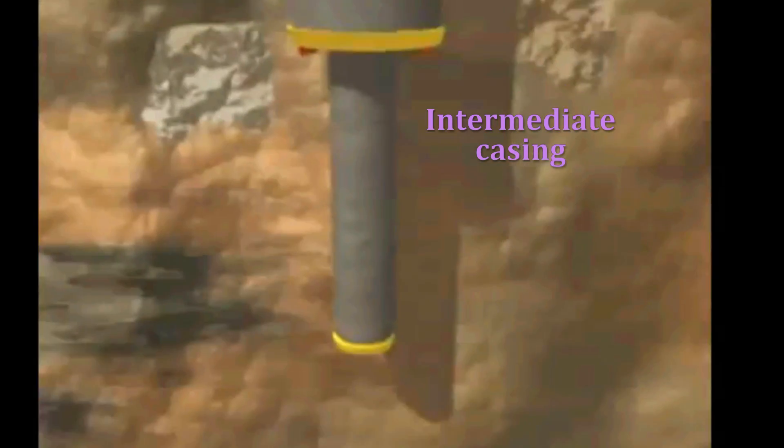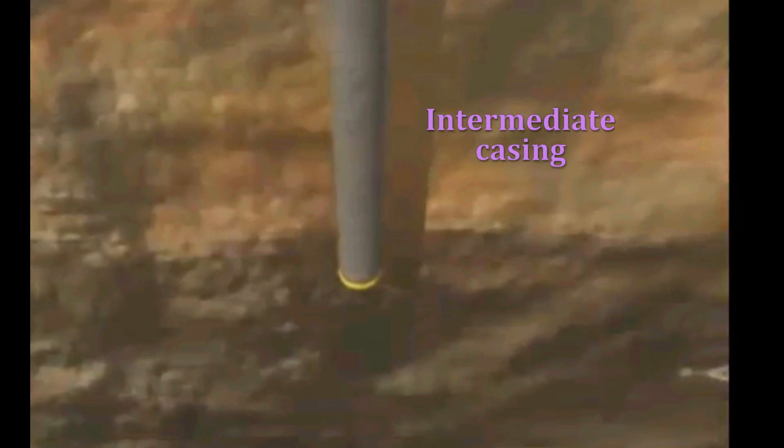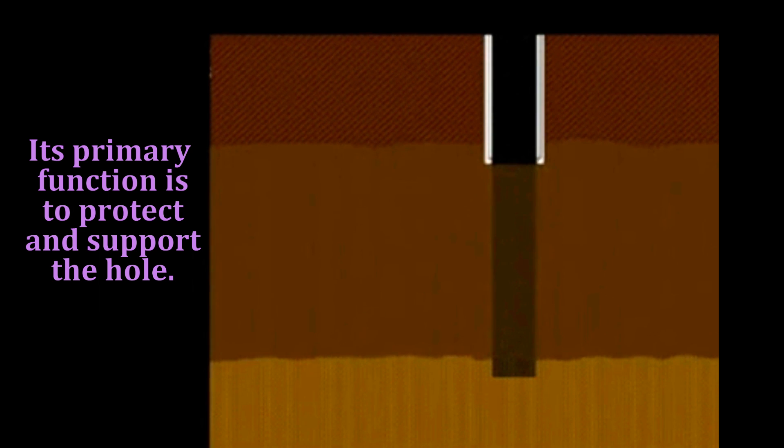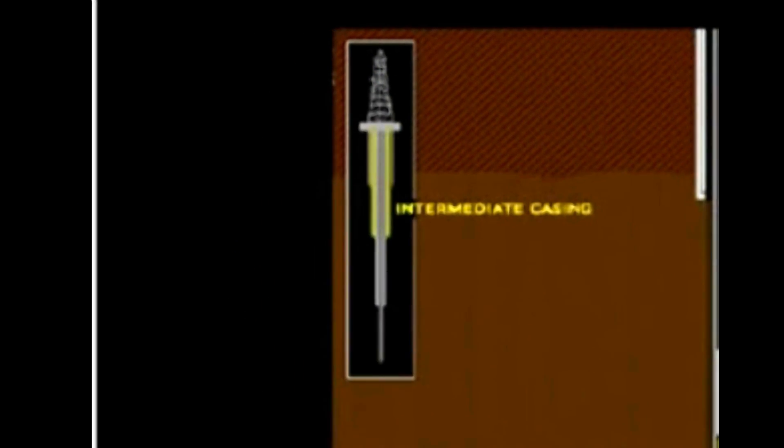In deeper wells, a second type, called an intermediate casing, is run in and cemented. Where intermediate casing is required, its primary function is to protect and support the hole above the zone or zones of interest.